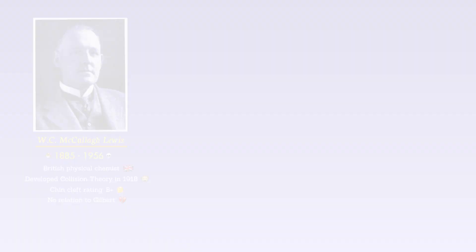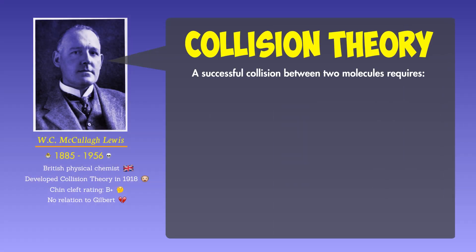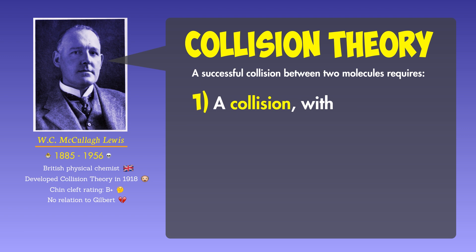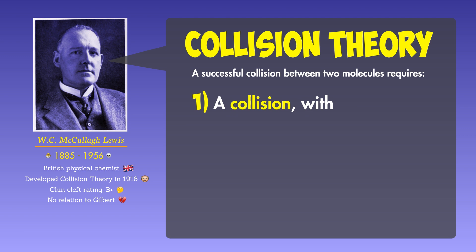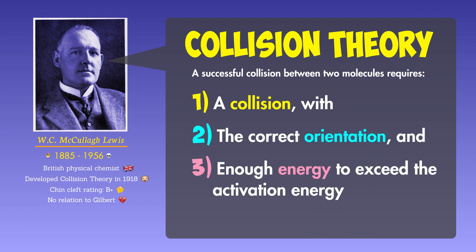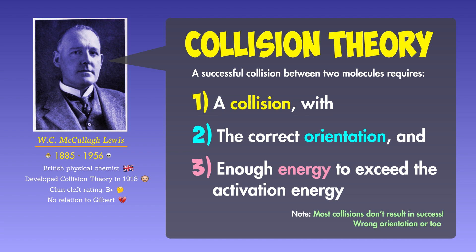Collision Theory says that for two molecules to react, three things need to happen: the two molecules need to collide, they need to collide with the correct orientation, and they need to collide with sufficient energy. If any one of these three things is missing, there is no reaction. How fast a reaction goes depends on how many collisions between reactant molecules can successfully form the products.